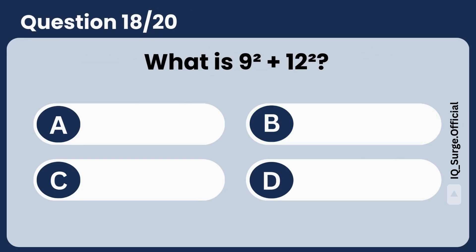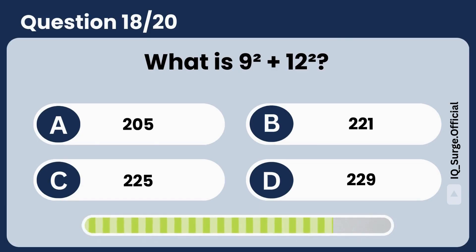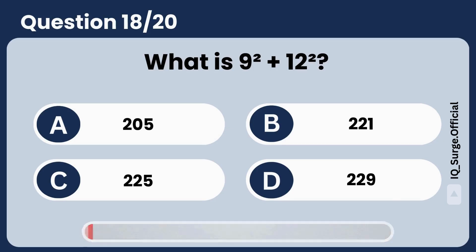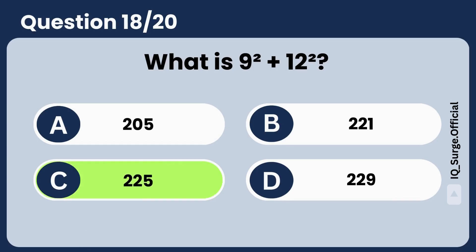What is 9 squared plus 12 squared? Answer: 225. Excellent.